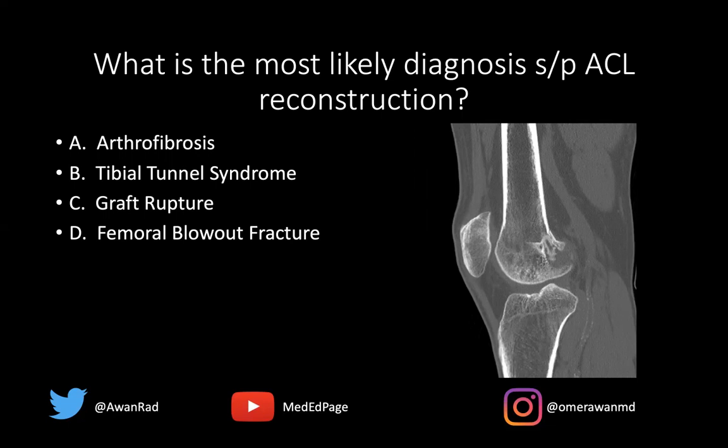Tibial tunnel syndrome is when we get expansion of the tibial tunnel, usually with cystic change or ganglion cyst. Again, more of an MRI or ultrasound diagnosis — we don't see that here. Graft rupture also can be insinuated on a CT, but again it's much easier to discern on an MRI.